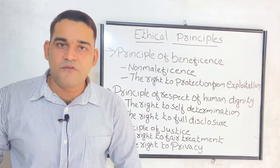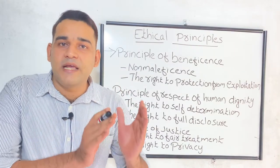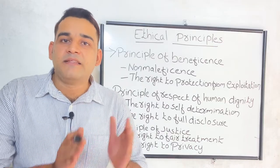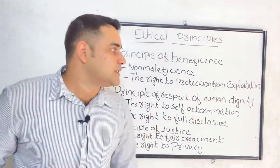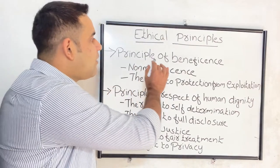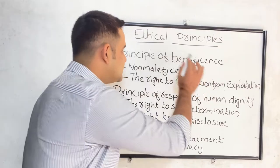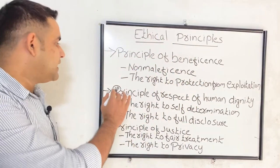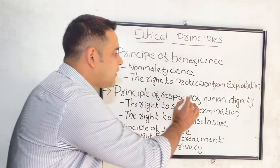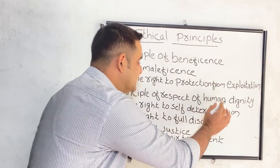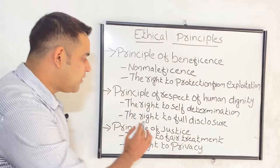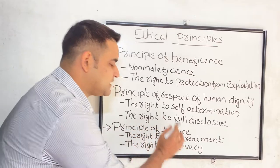We can see the principles of ethics. Mainly there are three principles. The first one is the principle of beneficence, the second one is the principle of respect for human dignity, and the third is the principle of justice.